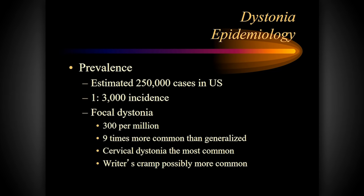How common is dystonia? The prevalence in the United States is estimated to be a quarter of a million people — rare, but not that rare. One in 3,000 incidence of new cases. Focal dystonias are definitely more common than generalized dystonias: 300 per million, nine times more common than generalized. Of focal dystonias, cervical dystonia is the most common, followed by blepharospasm. Writer's cramp, the hand goal-directed dystonia, is probably more common but less recognized. Cervical dystonia is definitively the most common type we see in clinics.